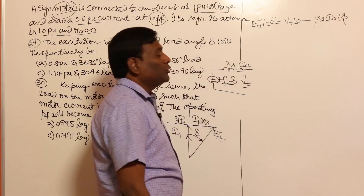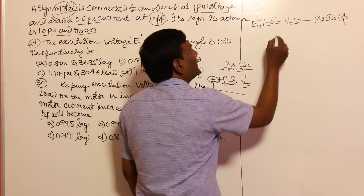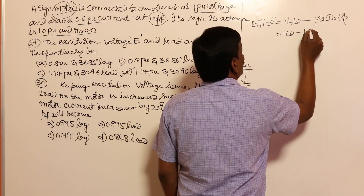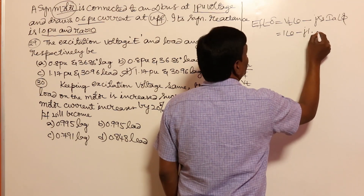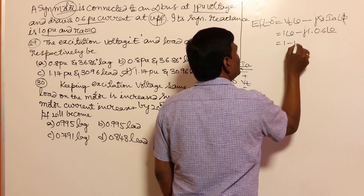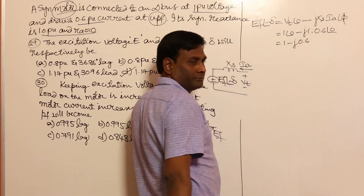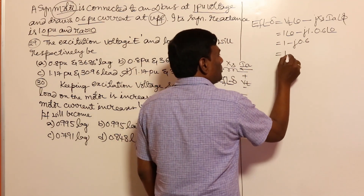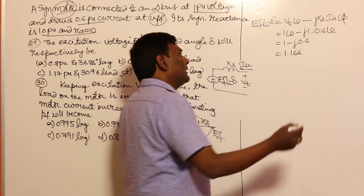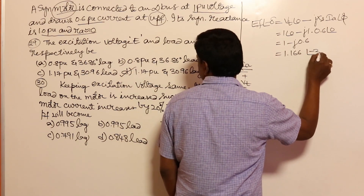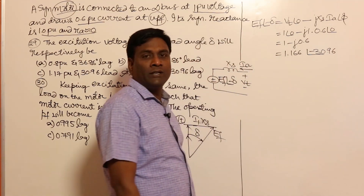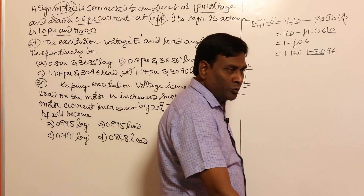He says unity power factor, so phi will be 0. This becomes 1 at angle 0 minus j times Xs (value = 1) times IA (value = 0.6 per unit) at angle 0. So this is 1 minus j·0.6, which comes down to 1.166 at an angle of minus 30.96 degrees.